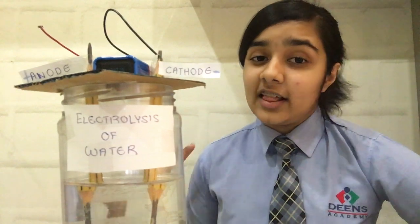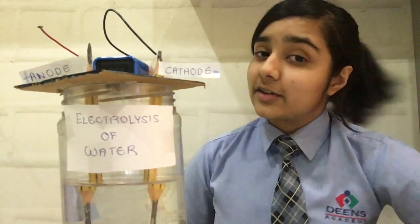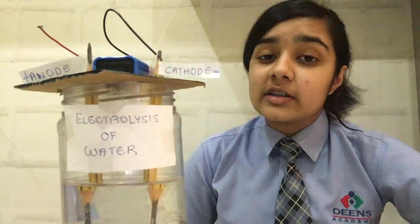Electrolysis of water is a process by which electricity is passed through electrolyzed water, splitting it up into its chemical components, which are hydrogen and oxygen.